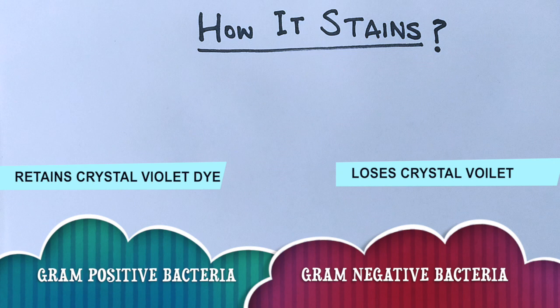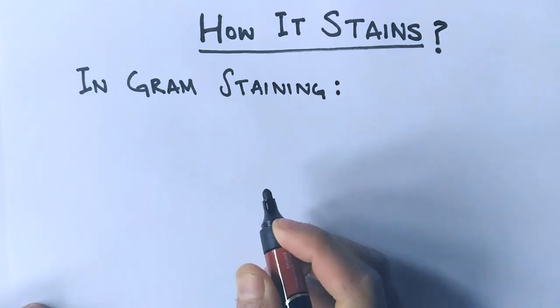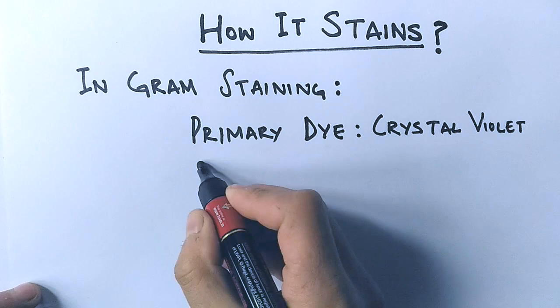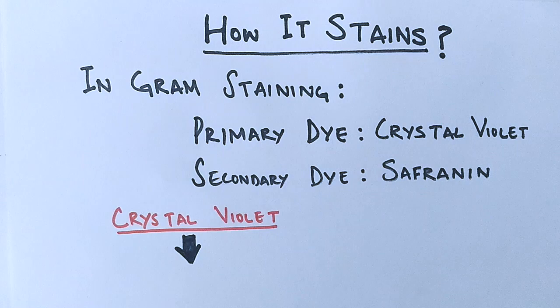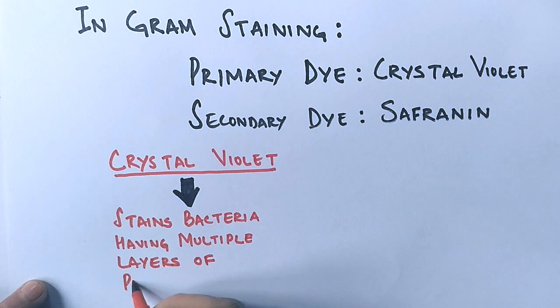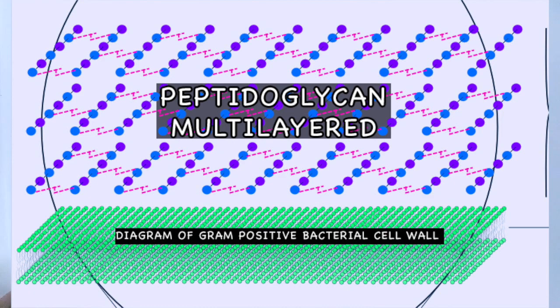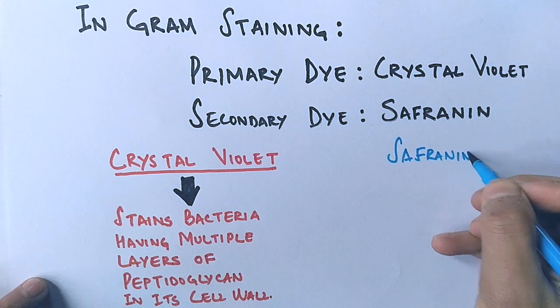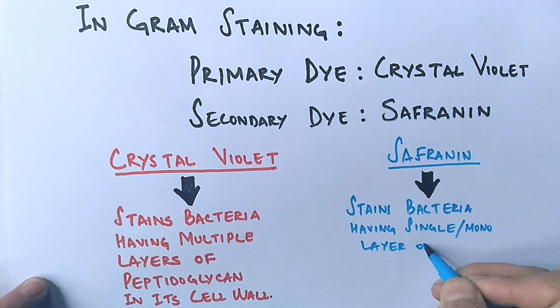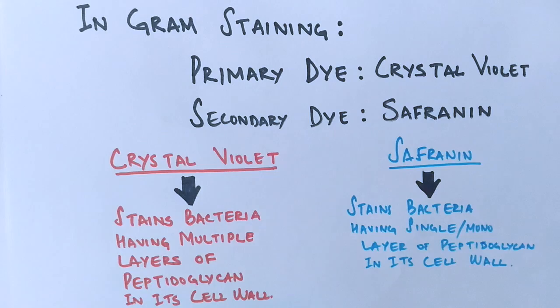In Gram staining technique we use two dyes: the primary dye, which is crystal violet, and the secondary dye, which is saffranin. Crystal violet is the first dye used during the staining procedure and it stains and is retained by those bacterial cells which have multiple peptidoglycan layers in their cell wall, as you can see in this diagram. Cells that lose the primary crystal violet dye are counterstained by the secondary dye saffranin, which stains bacterial cells having a monolayer of peptidoglycan in their cell wall.